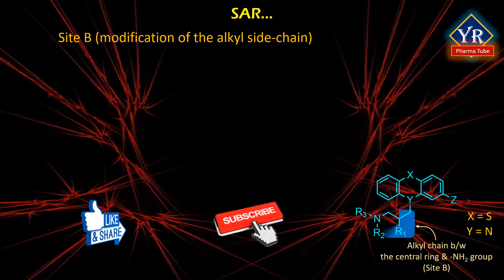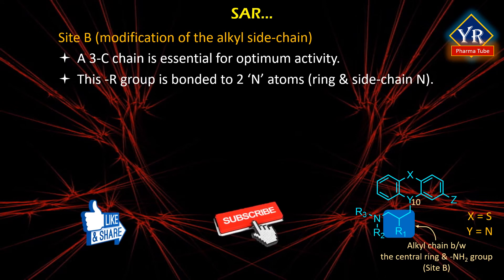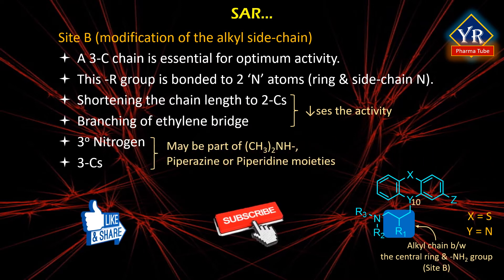Modifications at site B are carried out at position 10 of phenothiazines for pharmacological activity. For optimal antipsychotic activity, the basic amino group is necessary and is separated by three carbon atoms from the phenothiazine nucleus. This alkyl group should be bonded to two nitrogen atoms between the ring nitrogen and side chain nitrogen. Shortening the chain length to two carbons as well as branching of the ethylene bridge lowers the activity. In most successful drugs, the basic tertiary nitrogen, three carbon atoms away from the phenothiazine, may be part of dimethylamino, piperazine, or piperidine moieties.